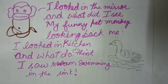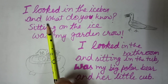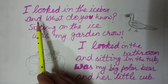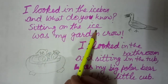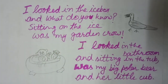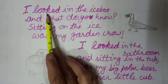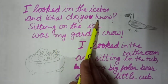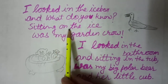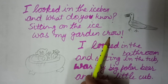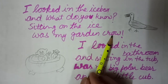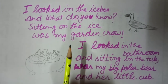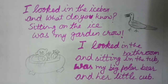Now we will proceed to the third stanza. 'I looked in the ice box and what do you know, sitting on the ice was my garden crow.' So when I looked in the ice box, and what do you know — sitting on the ice was my garden crow. That was the garden crow. So in this stanza the pet is crow.